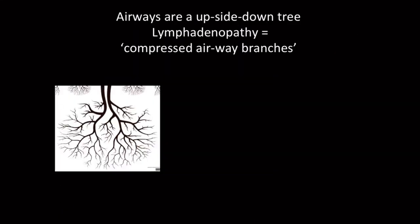I want to make a second important point: it's actually quite hard to see lymphadenopathy in kids, so you want to look for anything that will help you make your diagnosis. I've put up an upside-down tree because that's what we're dealing with when we talk about the airway in a child — it's a bronchial tree with diverging branches that become thinner and thinner. The important thing is that TB lymphadenopathy is firm and hard, while the airway in a child is soft and compressible because of the lack of cartilage.